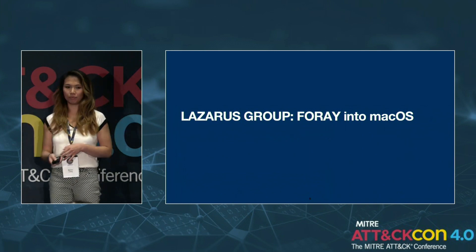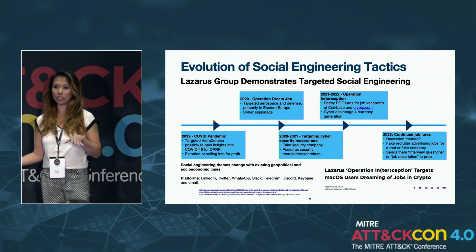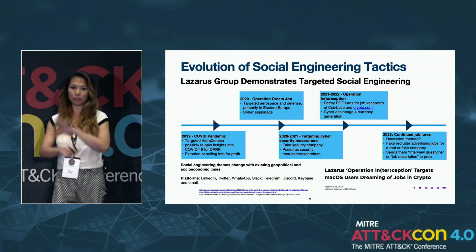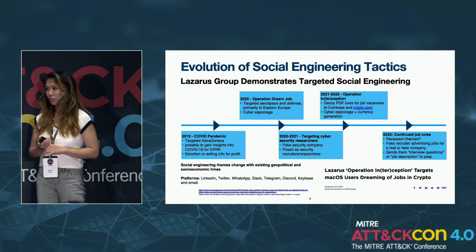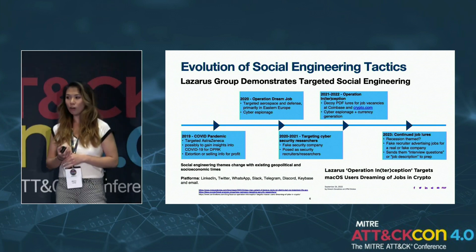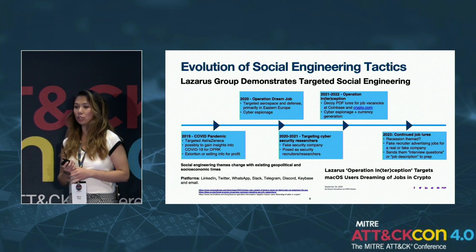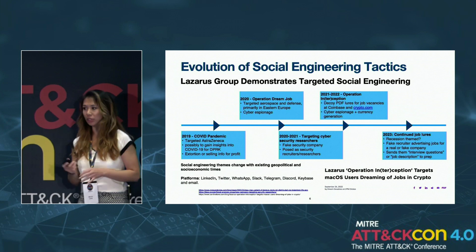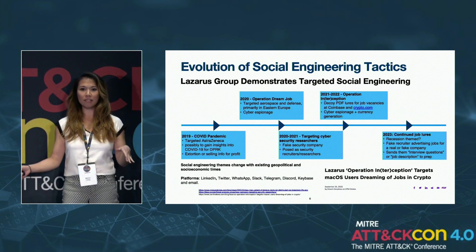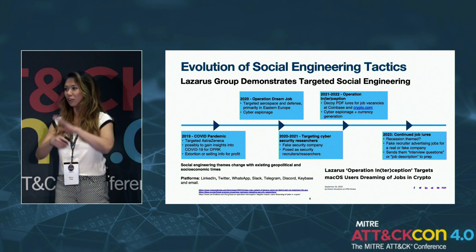Let's dive into the macOS side. They are great at social engineering. Here's a rough timeline of their recent campaigns. In 2019-2020, COVID hit and they targeted AstraZeneca — either to steal vaccine information for their regime or for extortion purposes. In 2019-2020, we saw Operation Dream Job targeting aerospace and defense industries, primarily in Eastern Europe. In 2020-2021, they targeted cybersecurity researchers.